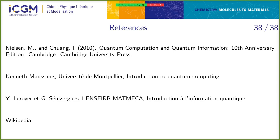A student asks: since unitarity is a strong argument for showing you cannot copy, why not consider a non-unitary quantum computing machine? The lecturer responds: here we are working with isolated physical systems. If you work with something non-unitary, you have another field of systems. The noise on quantum gates is actually a kind of application of a non-unitary operation. But intuitively, even with non-unitary operations, you still probably cannot copy.